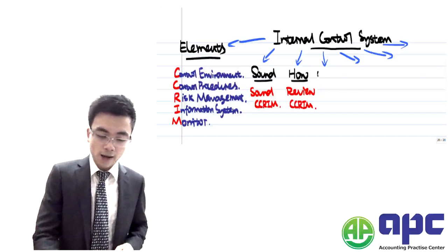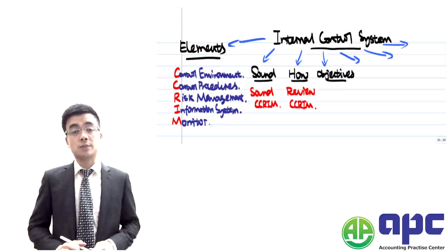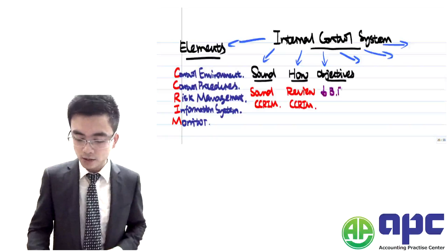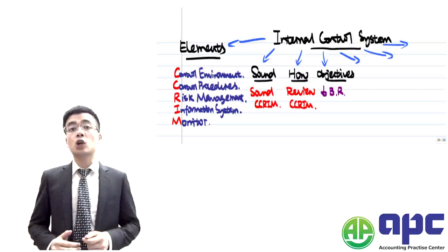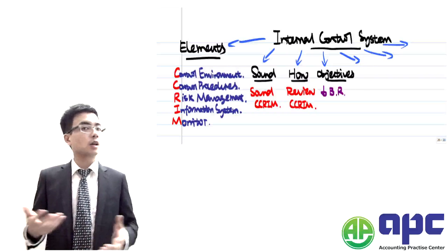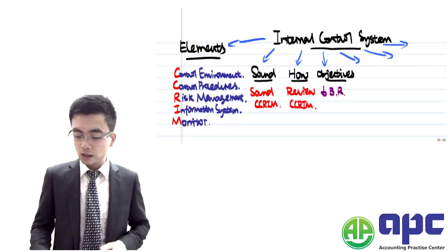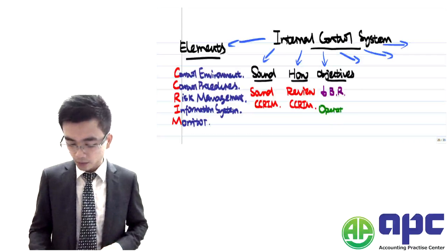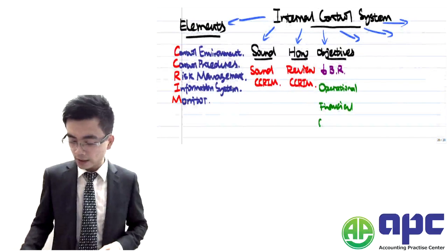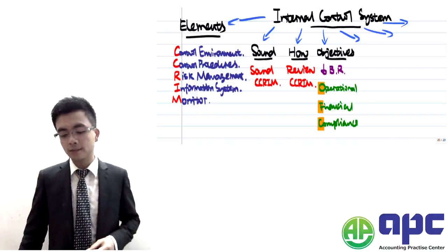The fourth aspect is the objectives of the internal control systems. The overall idea is to minimise business risks — the risk that the company will fail, which you can call entrepreneurial risk or enterprise risk. The business risk can be detailed into OFC: firstly, operational risk; secondly, financial risk; and thirdly, compliance risk.